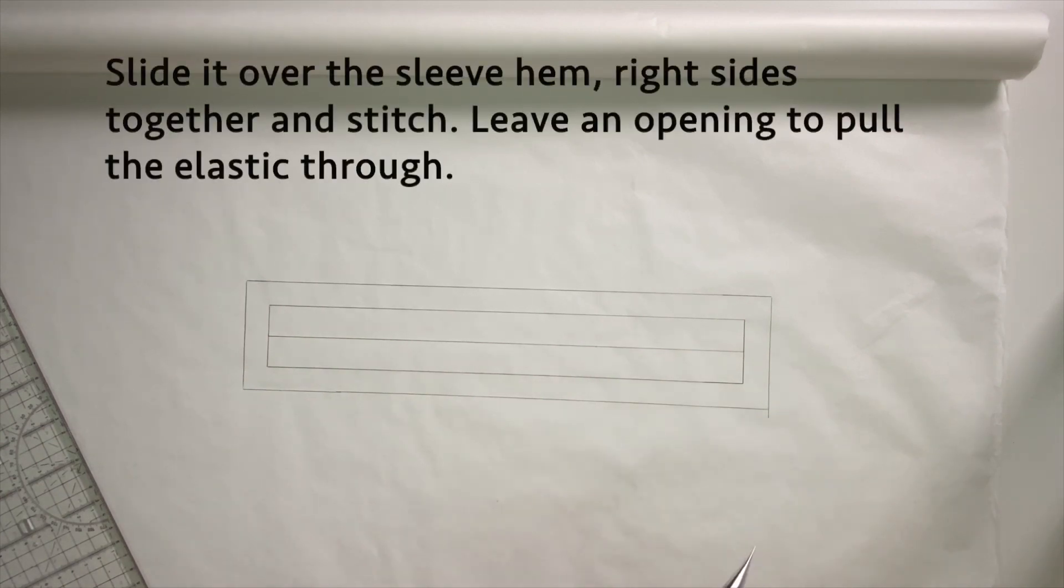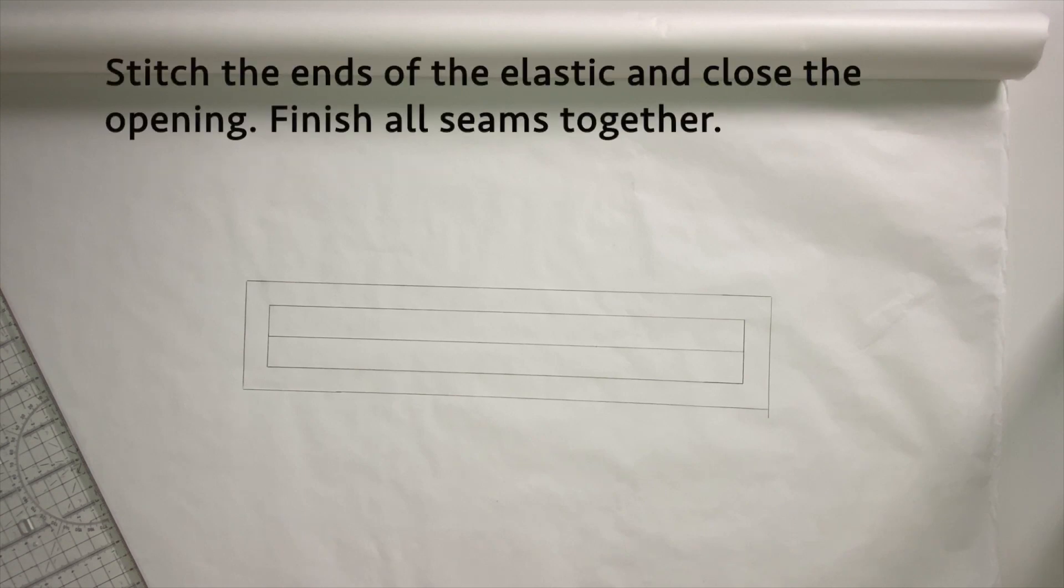And then you can fold it lengthwise on the fold line of course and you iron this and then you can attach it to the sleeve. Always make sure when you attach it to the sleeve to leave an opening so you can put the elastic through.